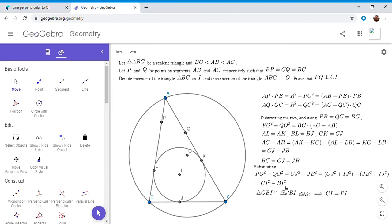So I'm going to write that here. That's true by side angle side. They both share side IB. PB is equal to BC. And BI is an angle bisector. So those two angles have to be equal. So CBI is congruent to PBI. And so CI is equal to PI. And by the same logic, BI is equal to QI. And so if we plug that into there, you get PO squared minus QO squared is equal to PI squared minus QI squared. And that's exactly what we wanted to show, because by the theorem that I mentioned, that proves that PQ is perpendicular to OI.